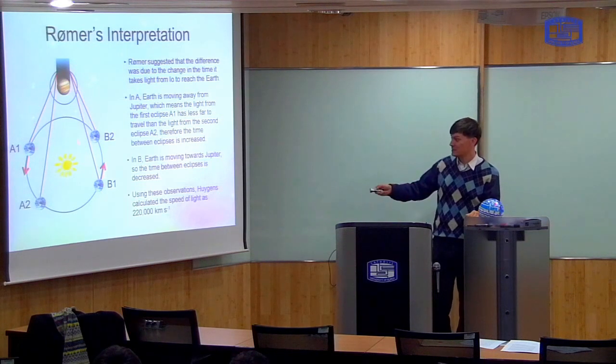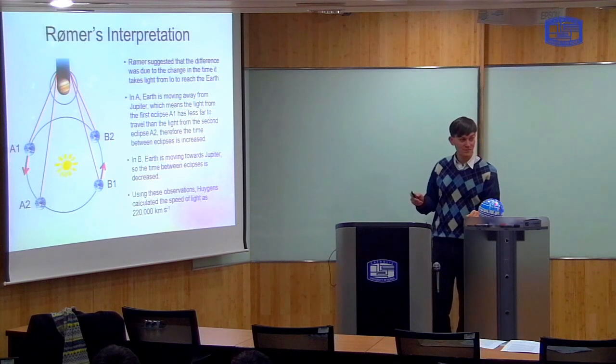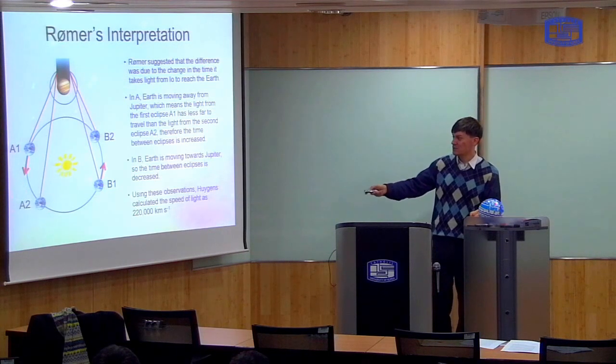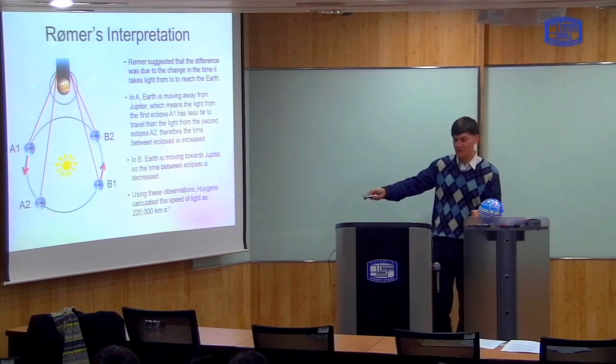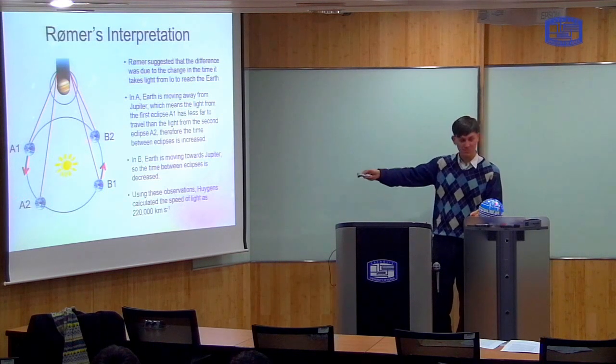And in this case, the first eclipse, the Earth is far away, and the second eclipse, the Earth is closer. So the difference between the A observations and the B observations is here A1 is closer than A2, and here B1 is further than B2.